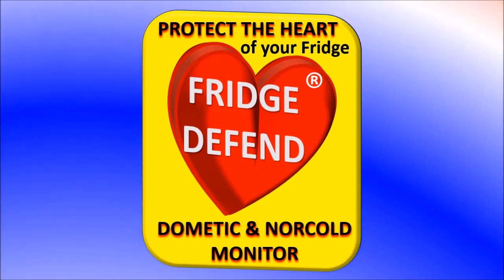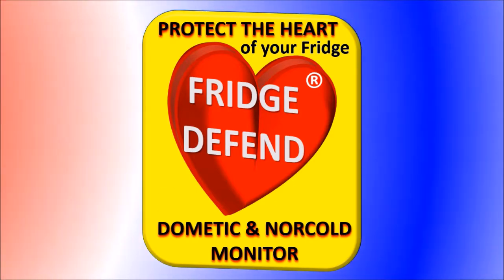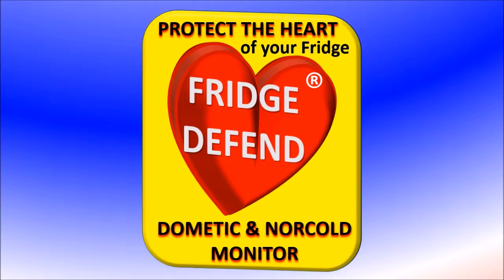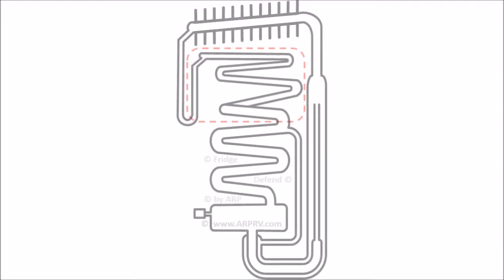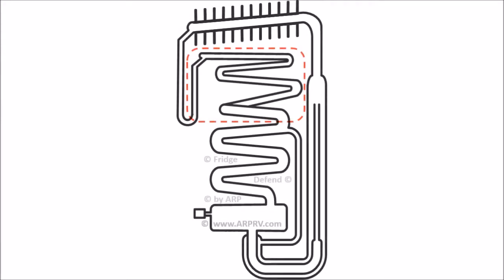I will explain how modern RV refrigerators with absorption type cooling units function. The black lines are the cooling unit's tubing. The cooling unit parts that are within the red dashed lines are the only parts that protrude into the refrigerated space. Everything outside the red dashed lines can be seen on the back of the refrigerator.